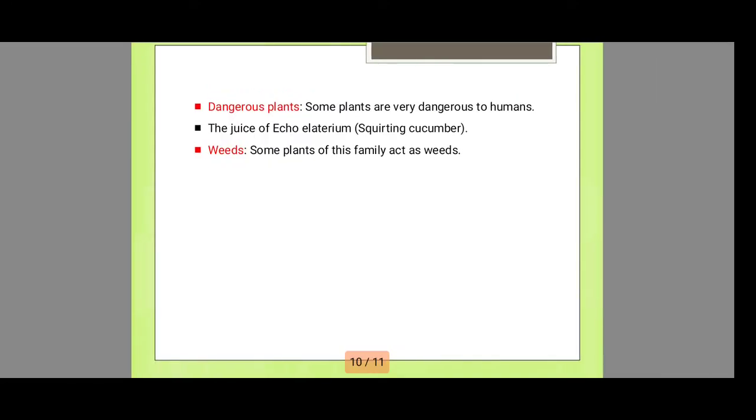Next are the dangerous plants. Some plants are very dangerous to human health. They have some poison in them. The juice of Ecballium elaterium, the squirting cucumber, is dangerous. Some plants of this family act as weeds.